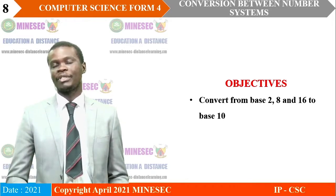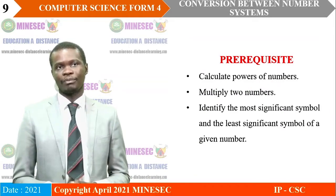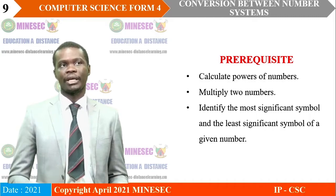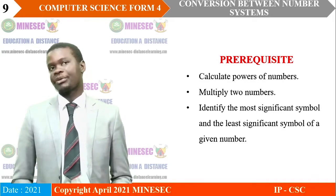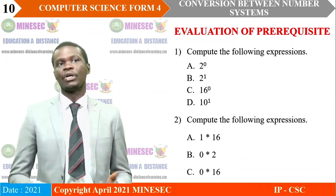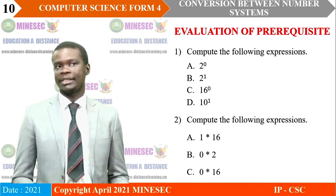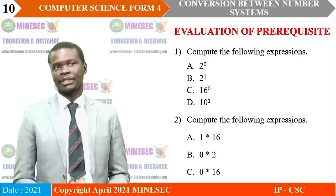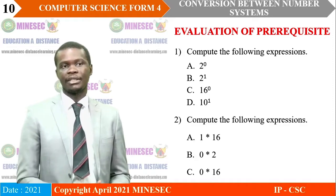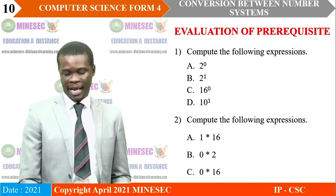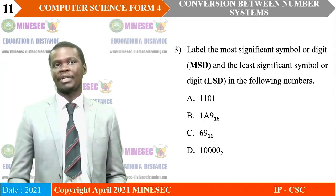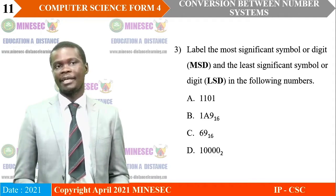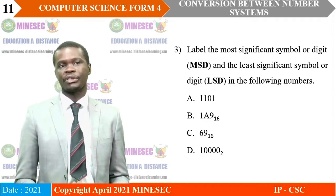To ease your understanding of this objective, you need to be able to calculate powers of numbers, multiply two numbers, and identify the most significant and least significant symbol or digit of a given number. Let's check your readiness with an exercise. Compute: A) 2 to the power 0, B) 2 to the power 1, C) 16 to the power 0, and D) 10 to the power 1. Also compute 1 times 16, 0 times 2, and 0 times 16. A third exercise asks you to label the most and least significant digit of: 1 1 0 1, 1 1 8 9 base 16, 6 9 base 16, and 1 0 0 0 0 base 2.